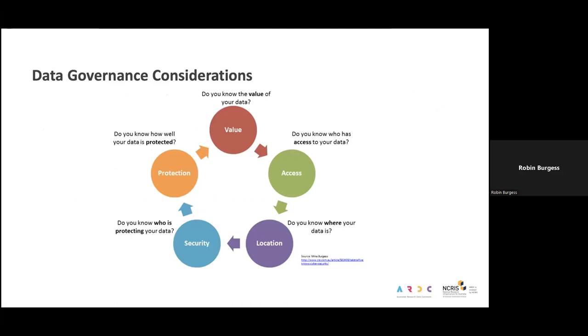This diagram comments on a couple of considerations in association with data governance. The first concept relates to value - do you actually know the value of your data? Within the value of the data, you could also be investigating and understanding the actual level and quality of the data that you're going to be handling and subsequently allowing access to. Do you know who actually has access to the data? And do you know where your data is actually being housed? Is it on local servers, is it within the state, is it on external devices, is it in Australia or outside of Australia?